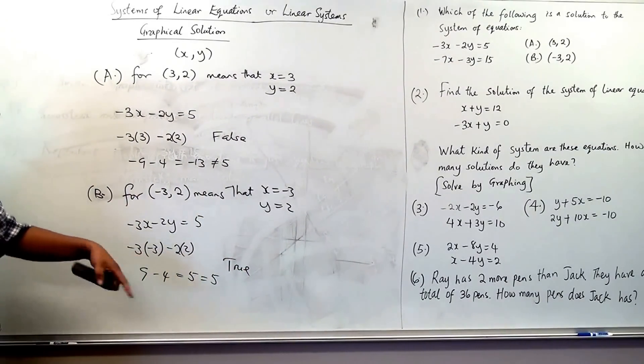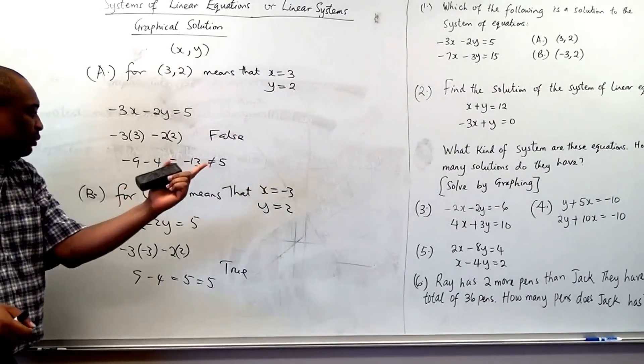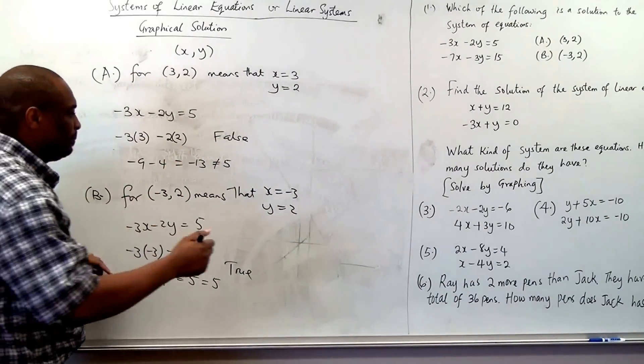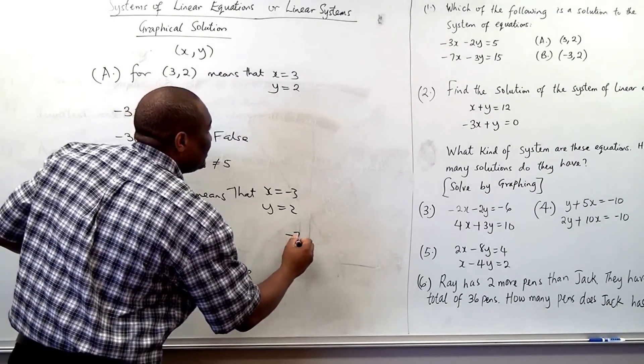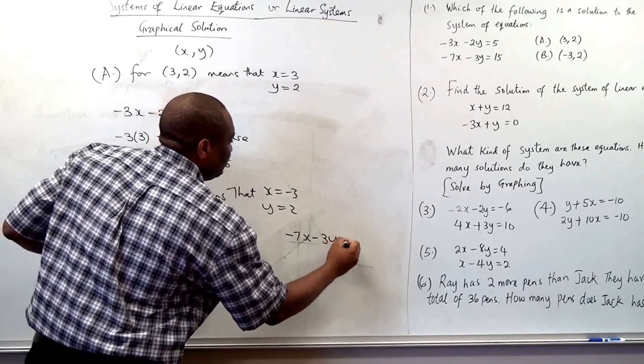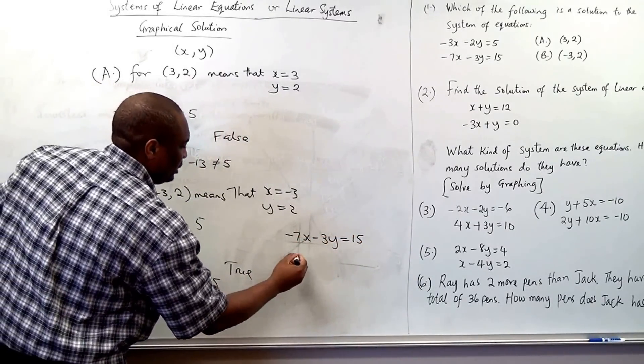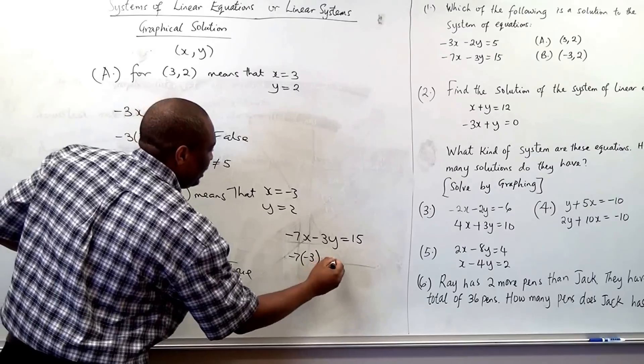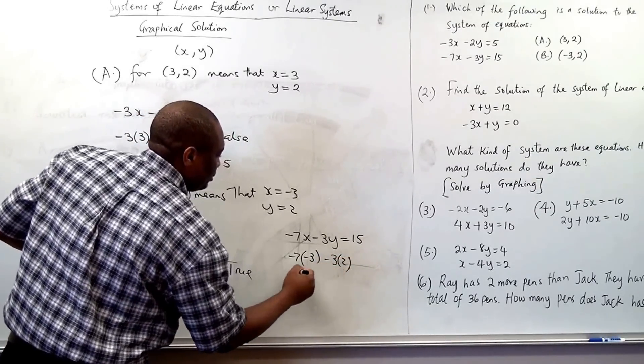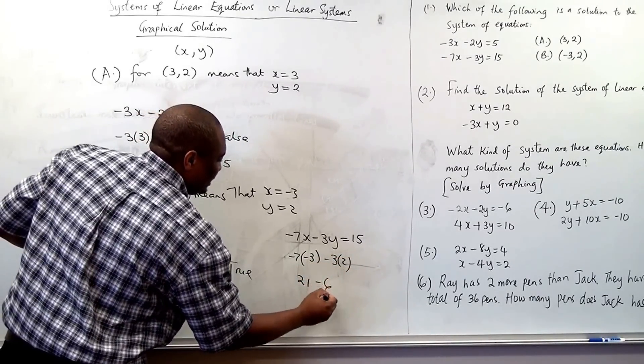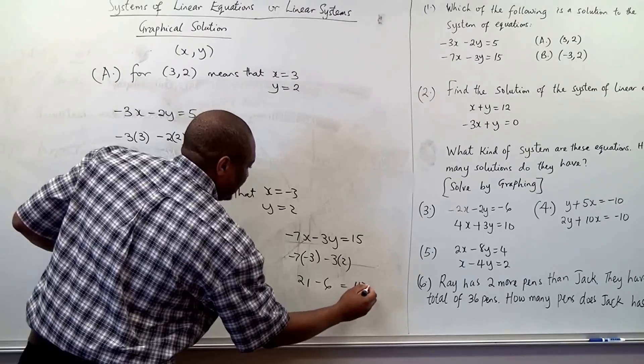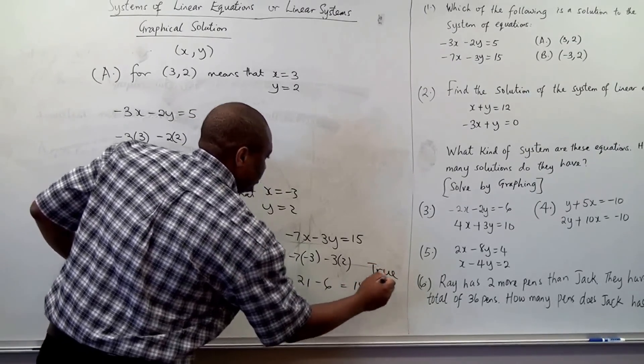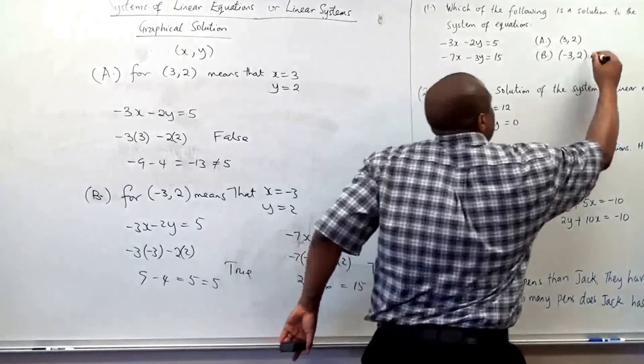For the first equation, let's try it again for the second equation. It has to be correct for both. The second one, negative 7x minus 3y to be 15. So you plug it in negative 7 times negative 3 minus 3 times 2 and this is 21 minus 6 and that gives you 15. True. So because of that, this is our answer.